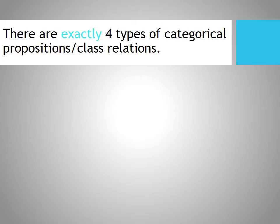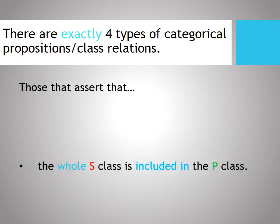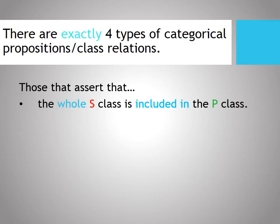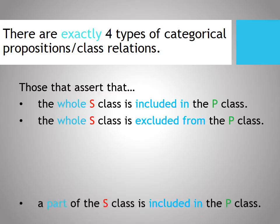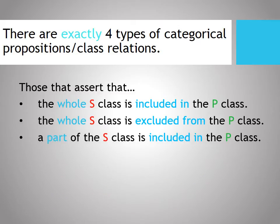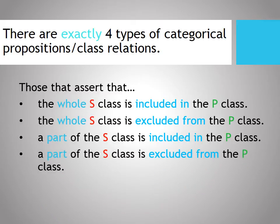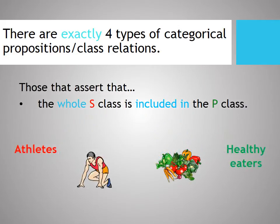There are exactly four types of categorical proposition or class relationships, and Aristotle laid them out. Some say the whole of class S is included in class P. Some say the whole of the subject class is excluded from the predicate class. Then you have situations where a part of the S class is included in the P class, and times when a part of the S class is excluded from the P class.